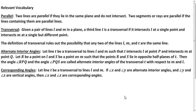One part that's important here is alternate interior angles. I'm talking about points on opposite half planes. A half plane is what you get when you cut a plane with a line — it cuts it into two half planes. Alternate interior angles involve points on opposite sides of a transversal.